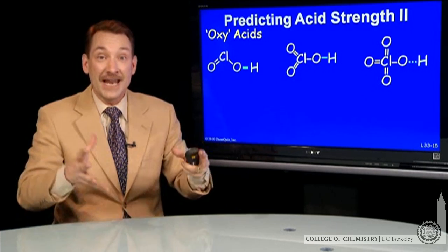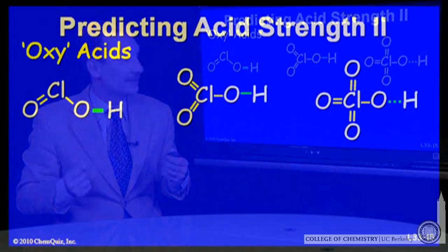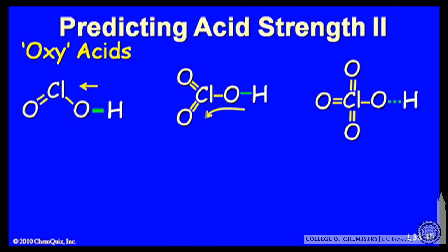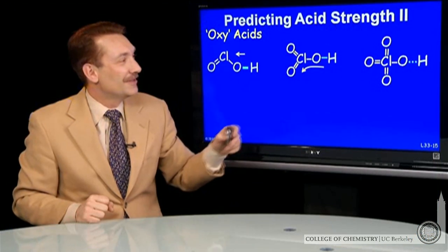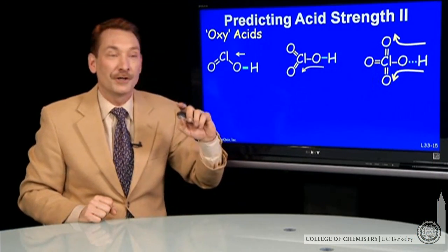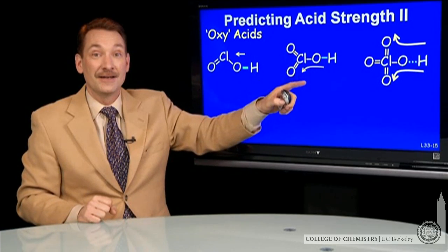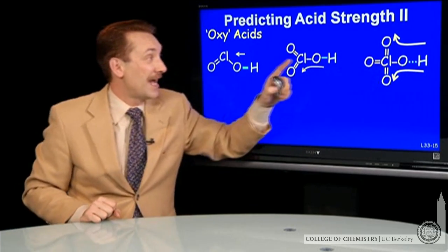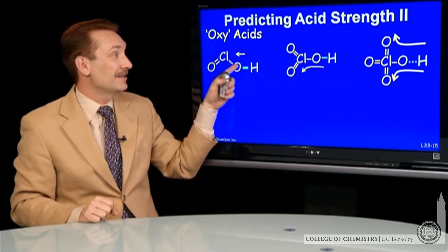You're effectively adding more electron withdrawing groups. So the electrons are spending more time, they have a higher probability of being found around the chloroxy region than the hydroxy region. So that bond becomes more polar, and the acid strength will increase. Stronger acid, slightly weaker acid, slightly weaker acid.